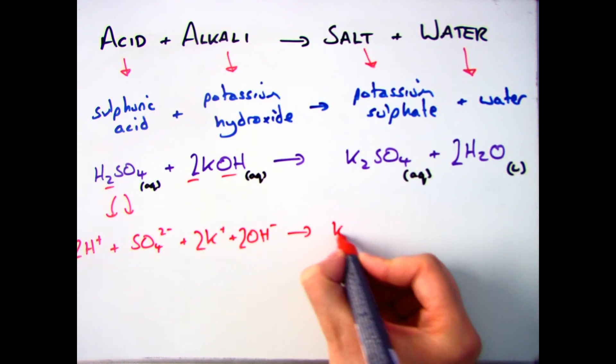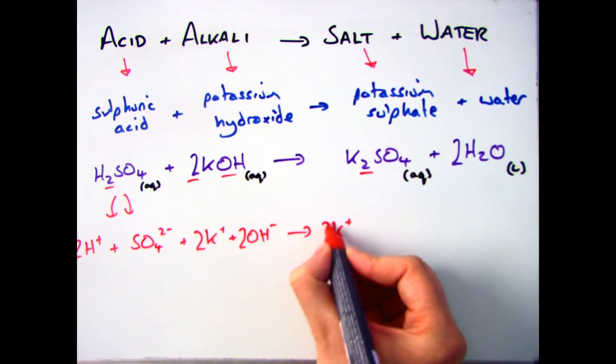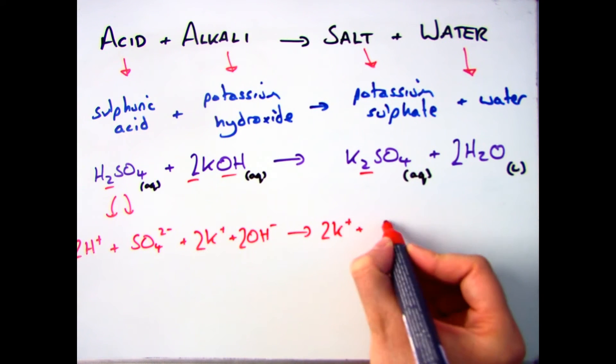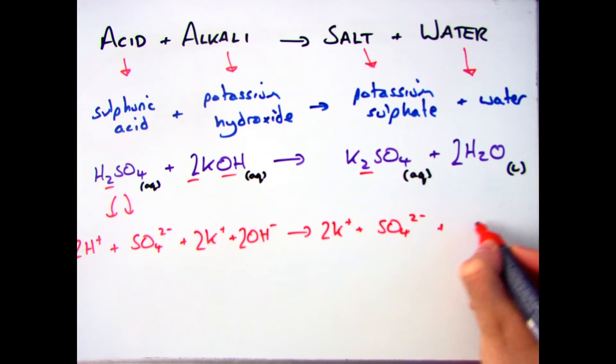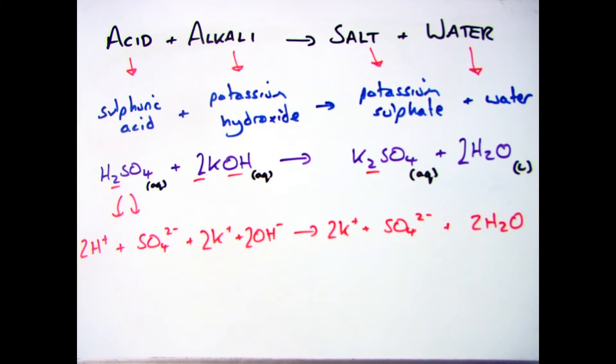And then on the right hand side of my products, I've got two potassium, so 2K plus. SO4 two minus, the compound ion that you need to know. And then I've got my 2H2O. Because that's a liquid, we don't break that down into the ions when we do the ionic equation.